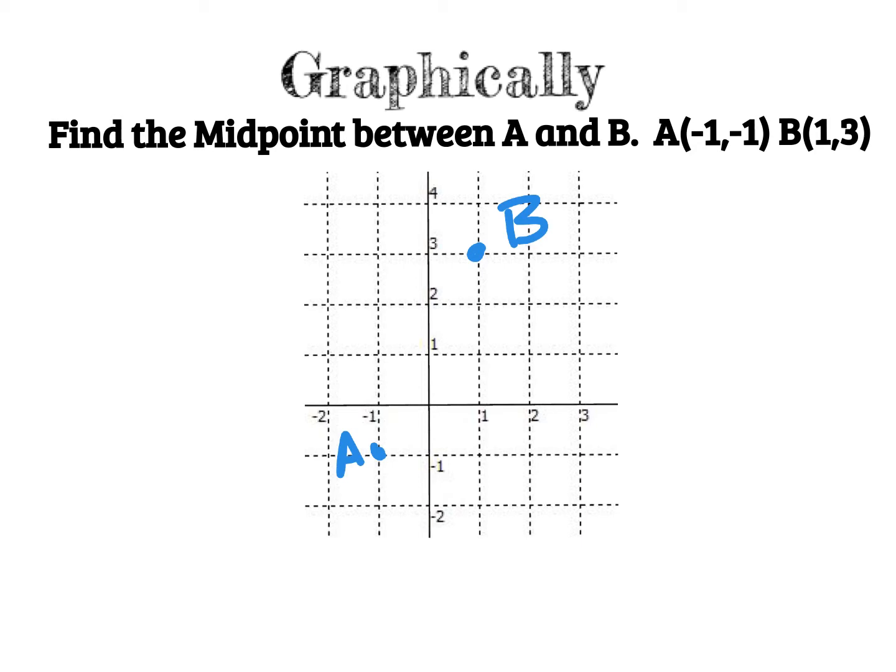I'm going to draw a right triangle to connect these two points. Now, I cannot find the halfway point on the diagonal. I can't count halfway through here. But what I can do is I can count half of this side, the horizontal, and half of the vertical. And that's what I'm going to do.